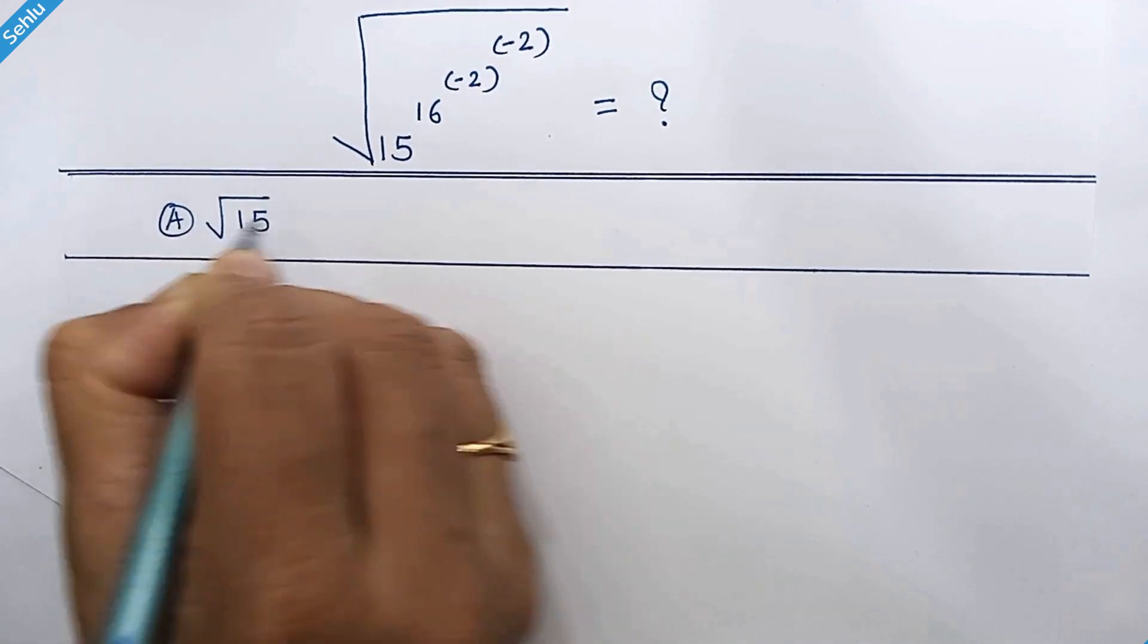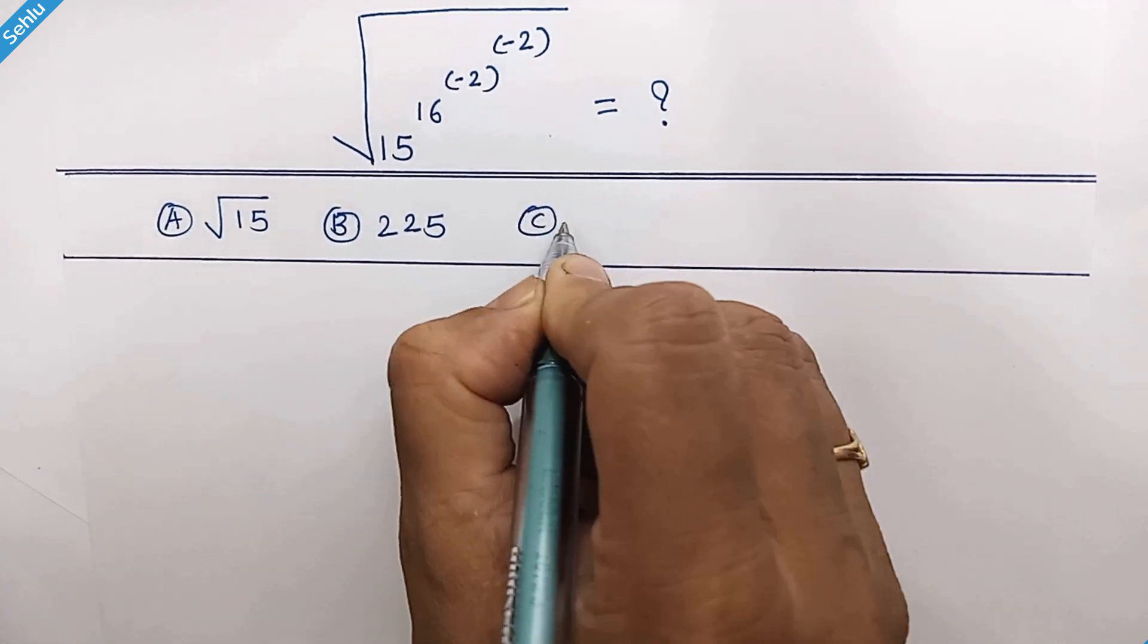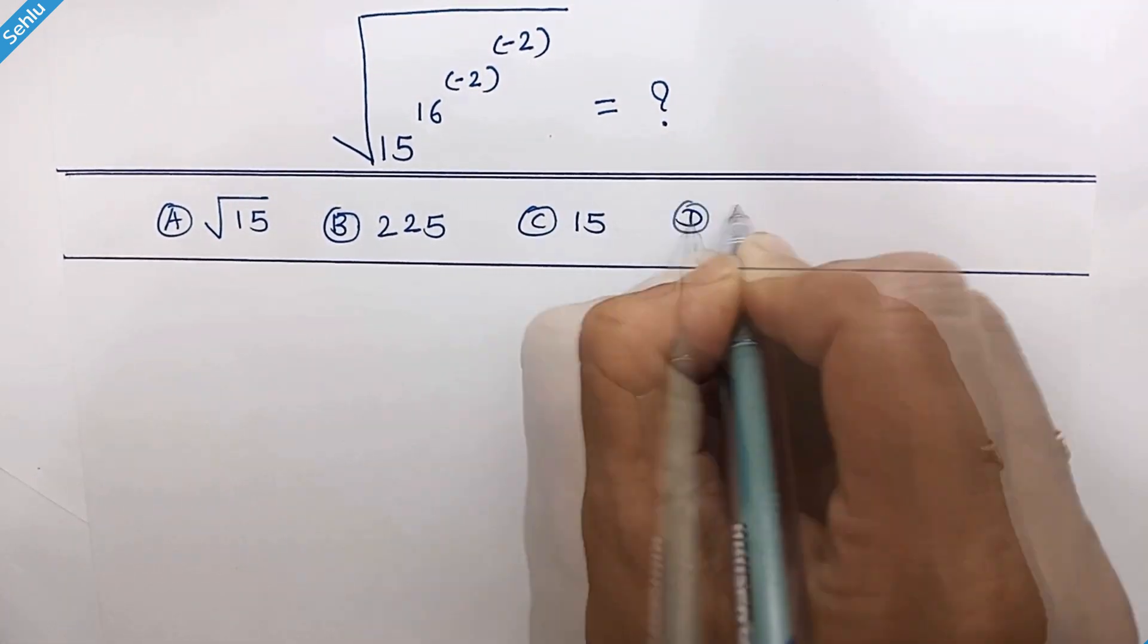A. Square root of 15, B. 225, C. 15, and D. 115.